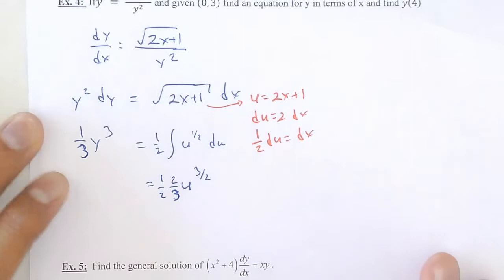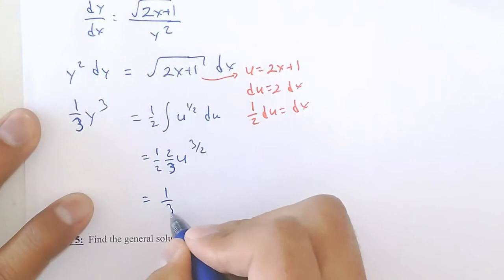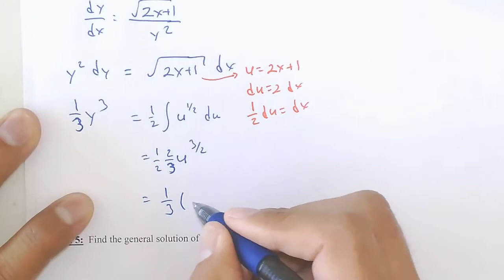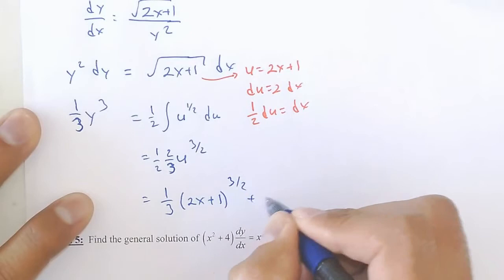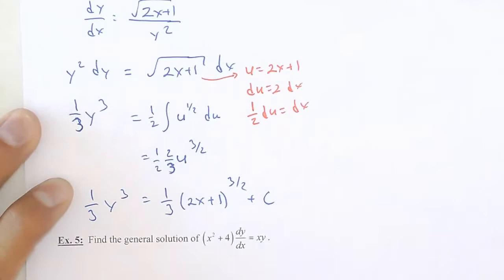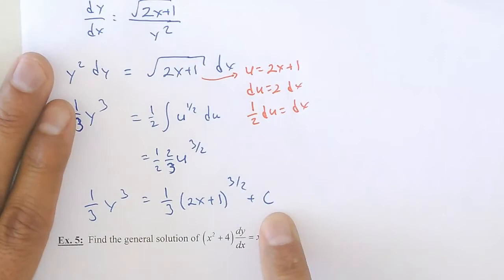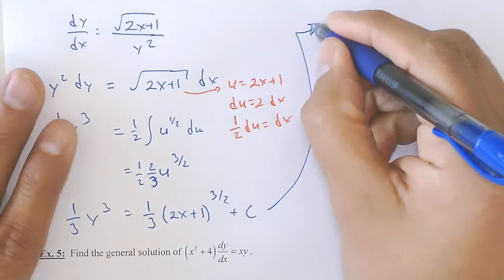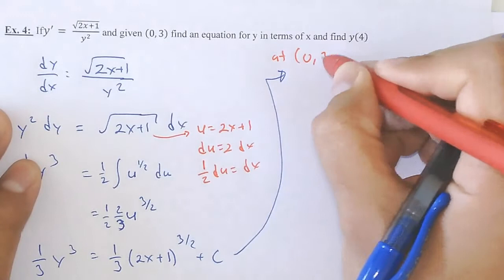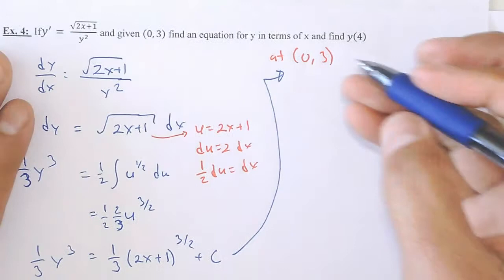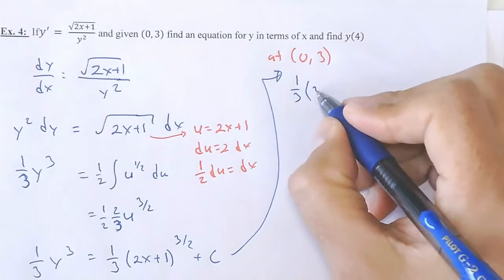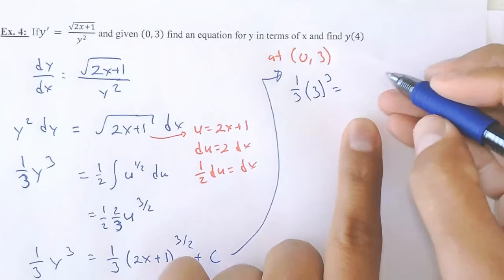I'm going to give myself a little space. The point given was (0, 3), so I'll plug in x = 0 and y = 3. Doing the algebra: (1/3)(3)³ = (1/3)(27) = 9 on the left. On the right, (1/3)(2·0 + 1)^(3/2) = (1/3)(1) = 1/3, plus c. So 9 = 1/3 + c, giving me my constant to be 26/3.